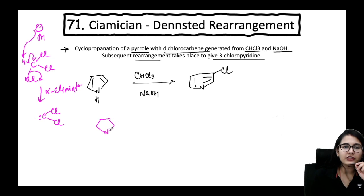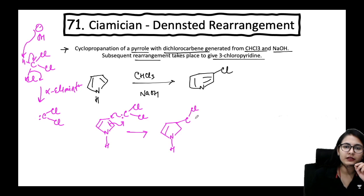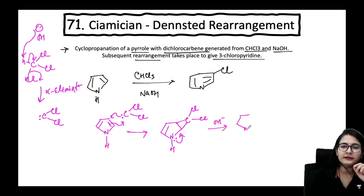Dichlorocarbene undergoes addition reaction — just like it gives simple addition to a double bond, it adds to one of the double bonds of the pyrrole molecule. Since nitrogen has a lone pair to attack, there is going to be ring expansion. We can also use a base here — the base deprotonates the nitrogen.